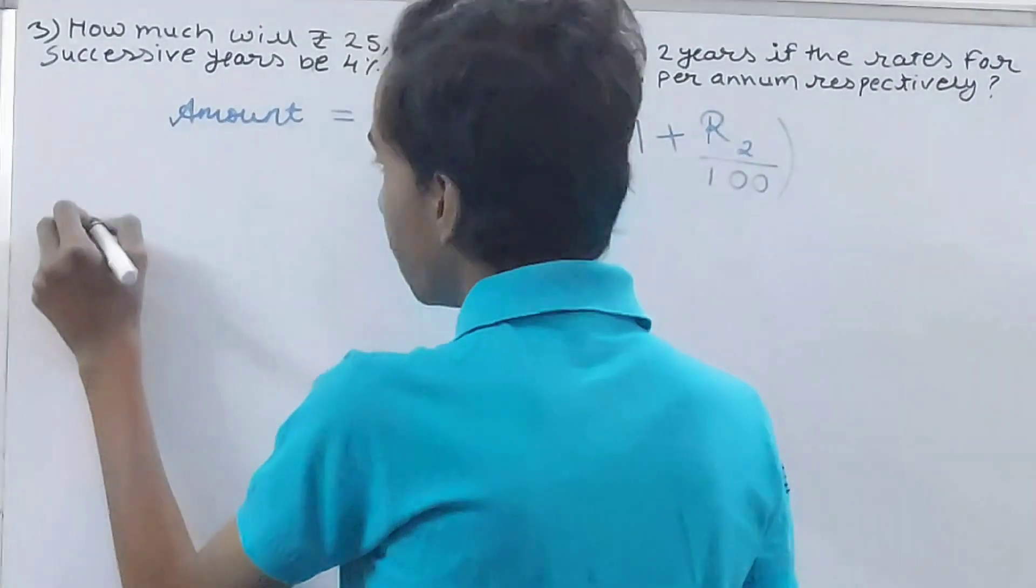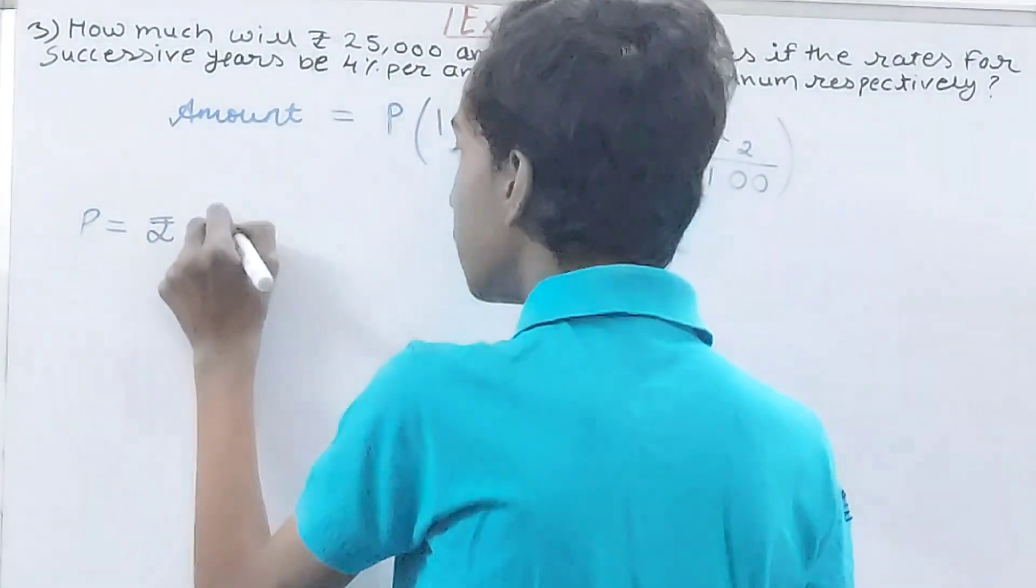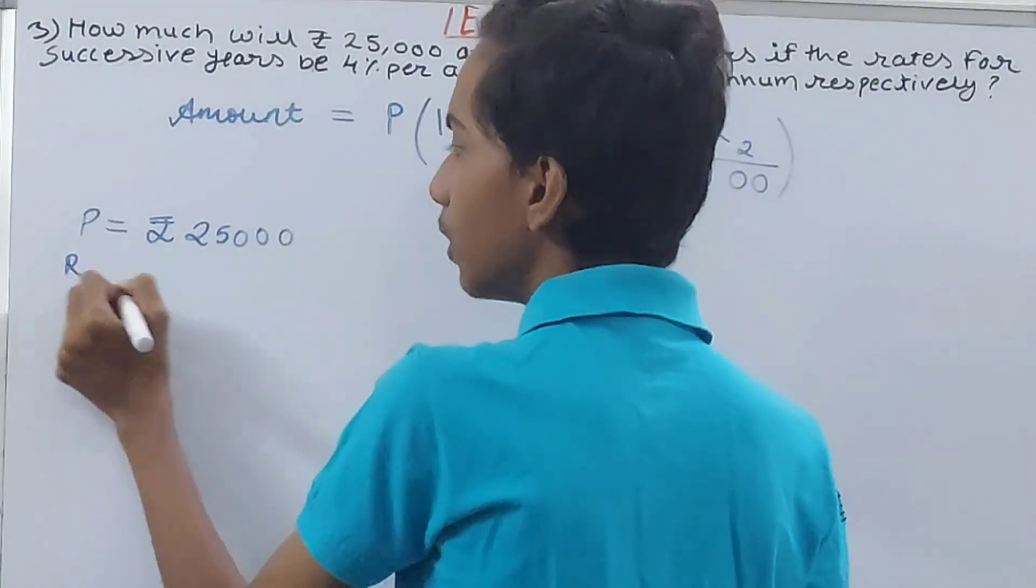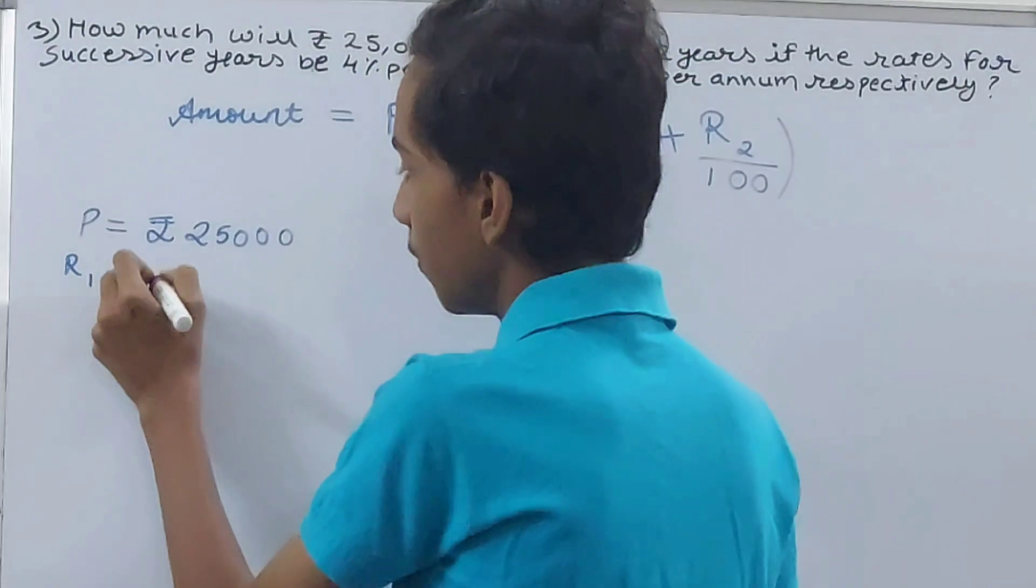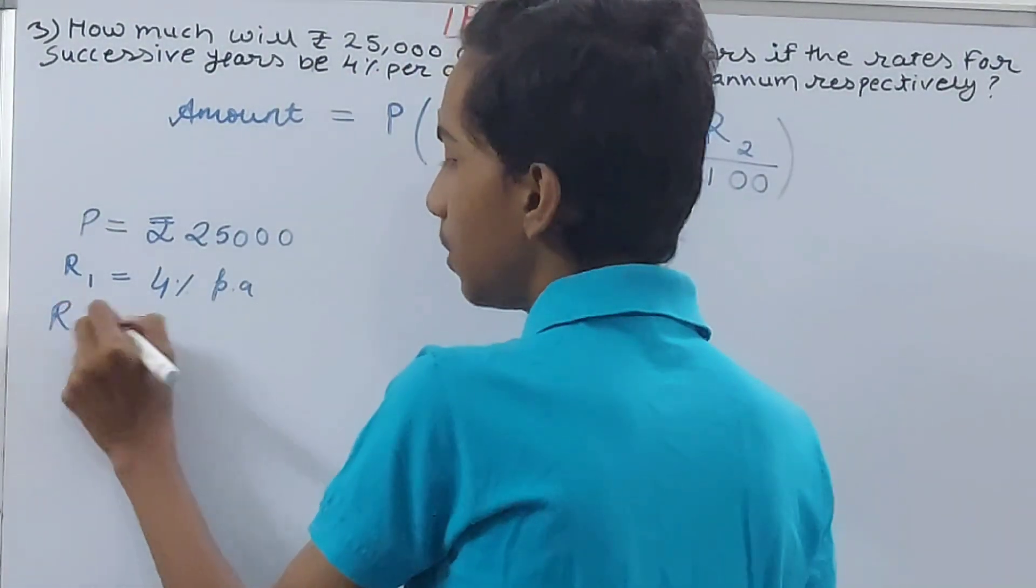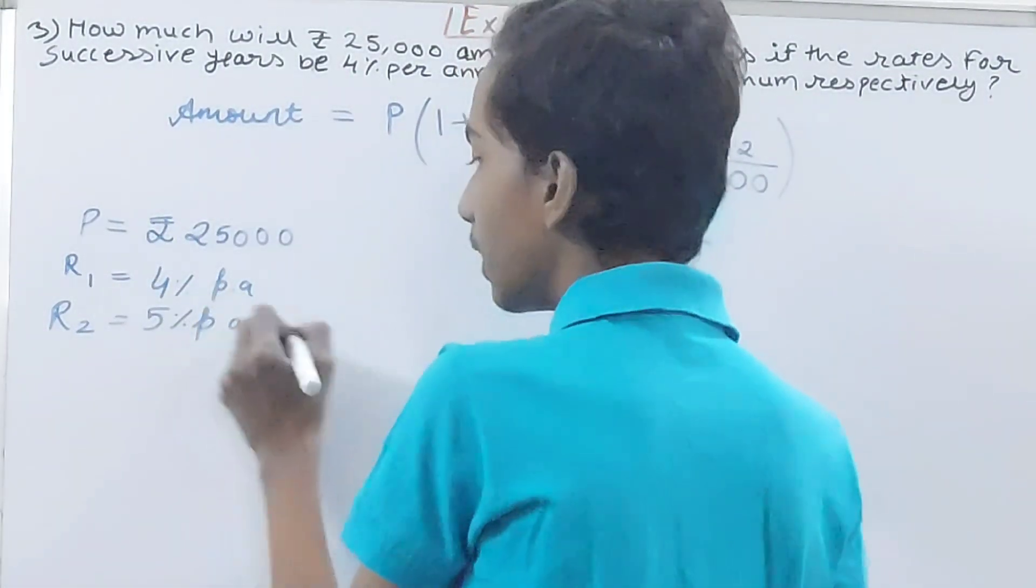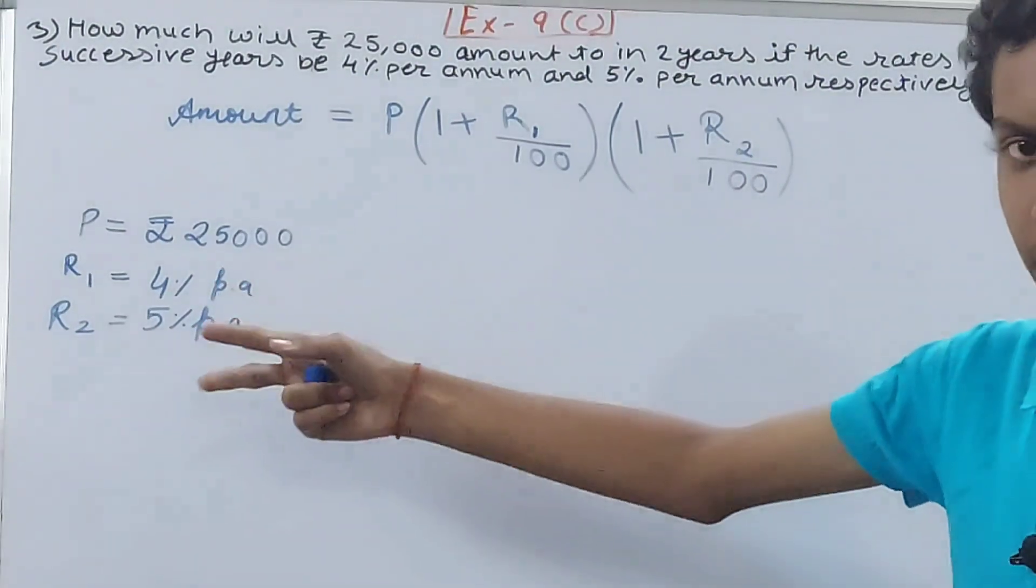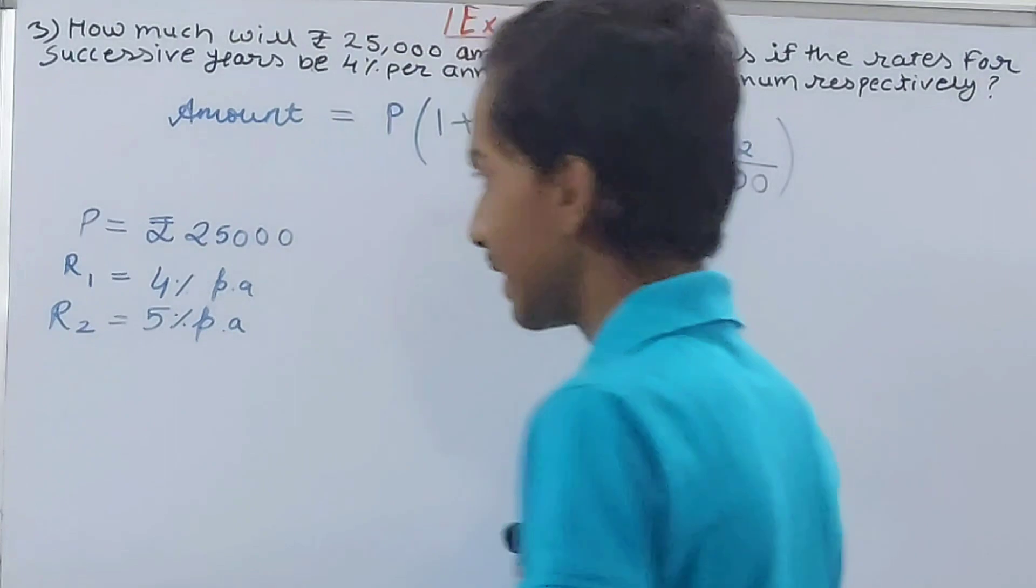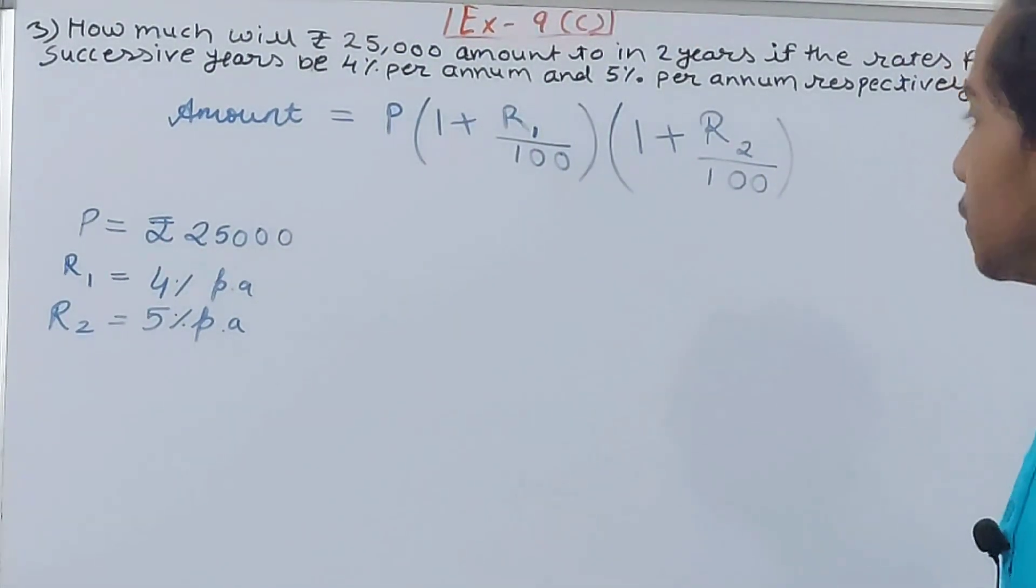So see, the principle is Rs. 25,000. The rate which I'll call R1 for the first year is 4% per annum. R2 is 5% per annum. So these two different rates I have categorized as R1, R2. And what else do we need? Nothing else. Don't take the time here because it's not given and there is no need of the time also. Just this much is fine. We can quickly begin.